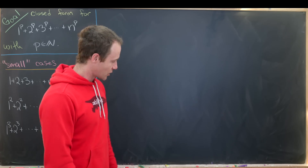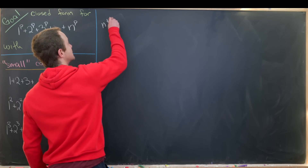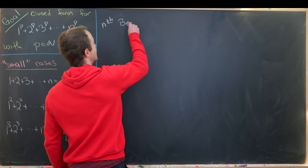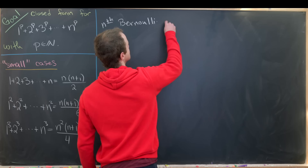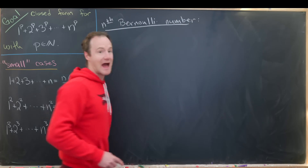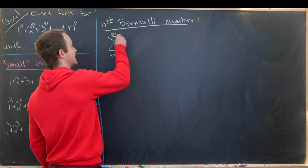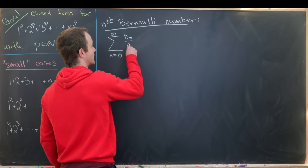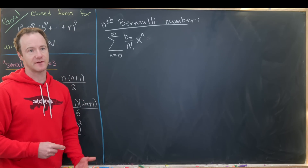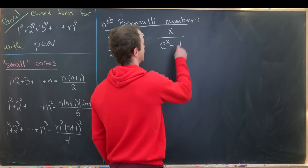In order to come up with a closed form, we need something called Bernoulli numbers. We define the nth Bernoulli number by the following power series — the exponential generating function: the sum as n goes from 0 to infinity of b_n over n factorial times x to the n, which equals x over e^x minus 1.